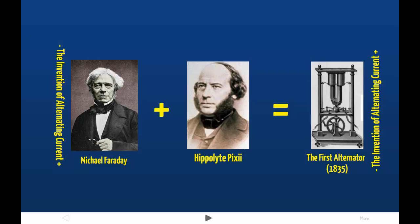At the time of Pixie's invention, there was no real use for alternating current. All the scientific research of the day was being conducted using direct current created by batteries. Because of this, all of the first electrical devices were designed to work with direct current. So, using a device called a commutator, the alternating current of a Pixie machine was turned into direct current for any practical use. Direct current ended up being the standard the world would work on, at least until the 1890s.